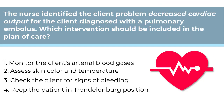Question number four. The nurse identified the client problem of decreased cardiac output for the client diagnosed with a pulmonary embolus. Which intervention should be included in the plan of care? Number one, monitor the client's arterial blood gases. Number two, assess skin color and temperature. Number three, check the client for signs of bleeding. Number four, keep the client in the Trendelenburg position.